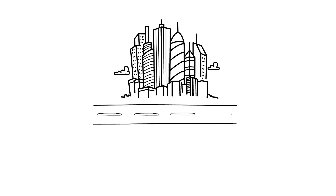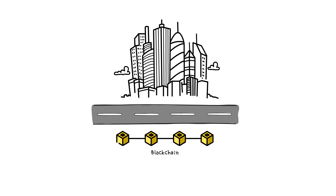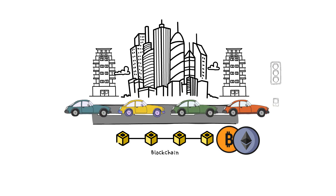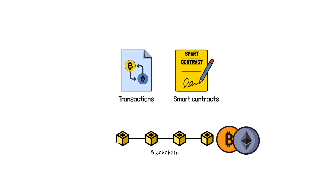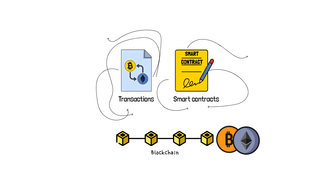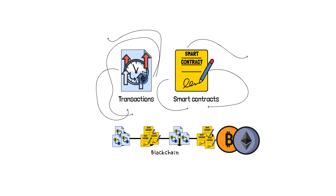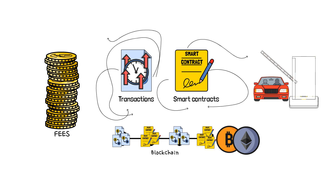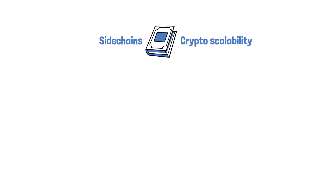Imagine a town with only one road for all of its traffic. This road is like the blockchain, a revolutionary technology that powers cryptocurrencies such as Bitcoin and Ethereum. As the city grows, so does the traffic, leading to jams that slow everyone down. In the world of blockchain, this traffic represents transactions and smart contracts bustling to get from one place to another. As the blockchain gets busier, transactions take longer to process and fees start to skyrocket. It's like waiting in line for hours just to pass through a tollbooth.